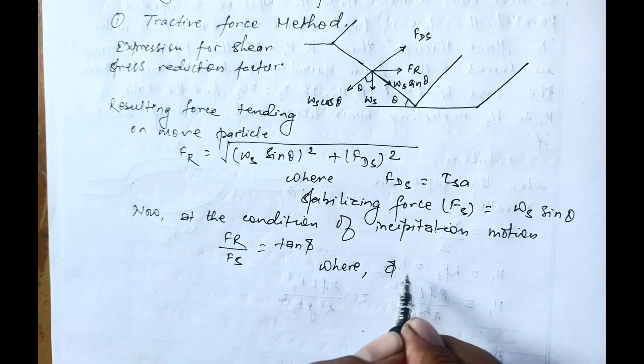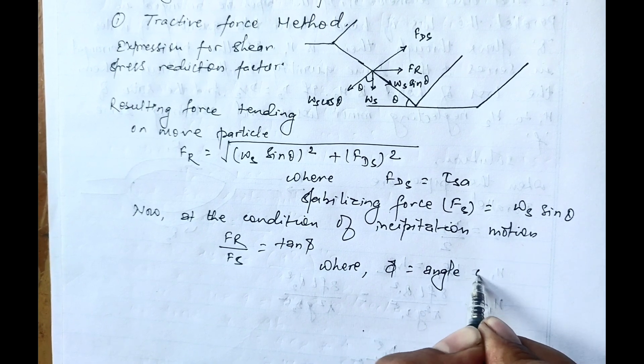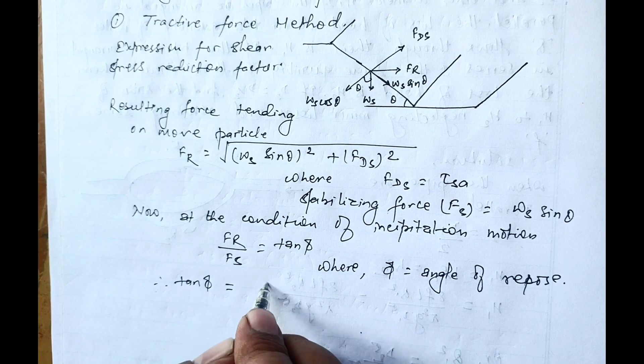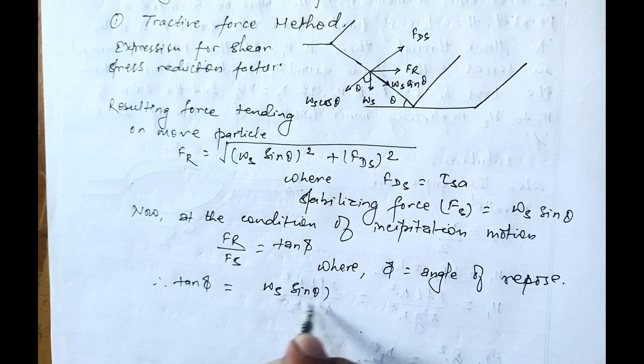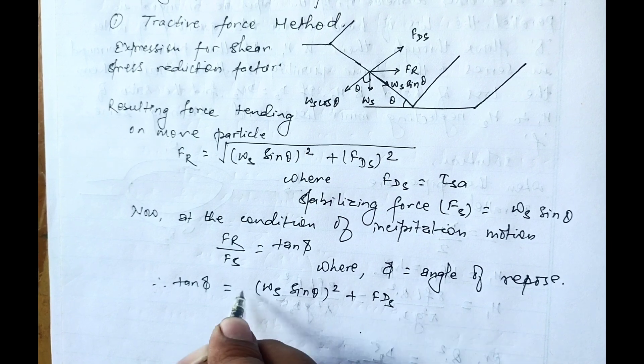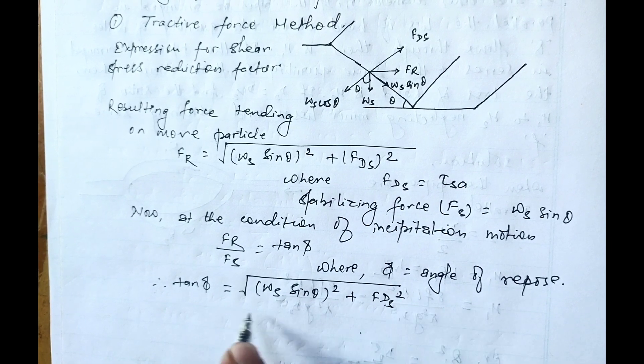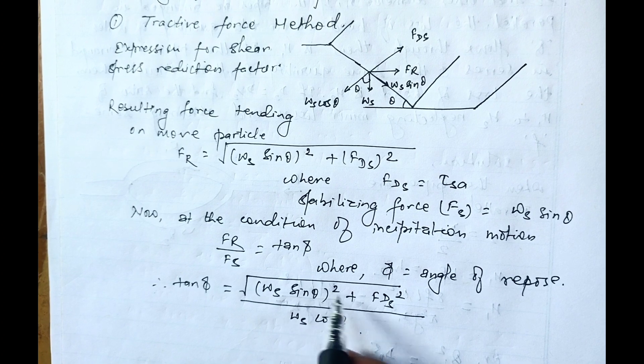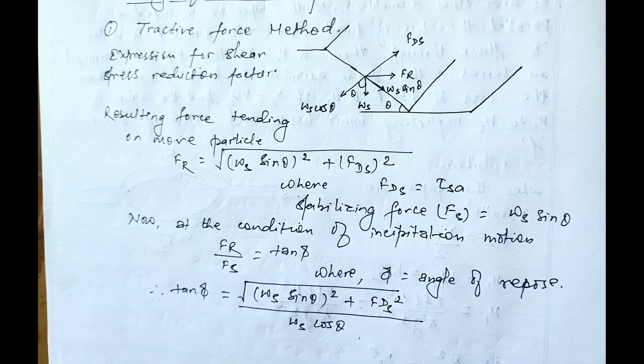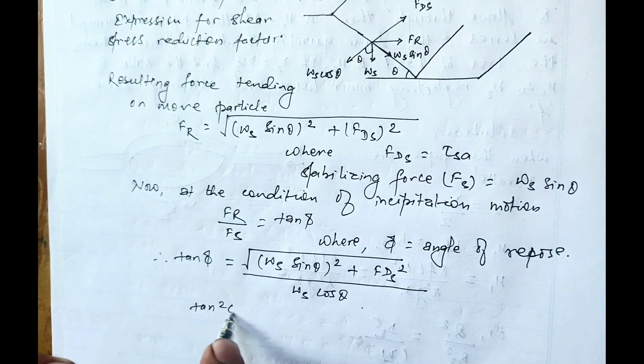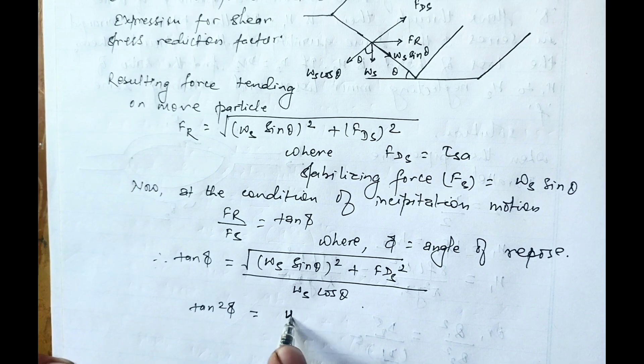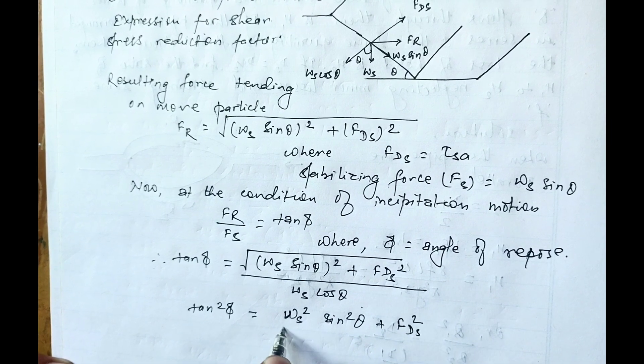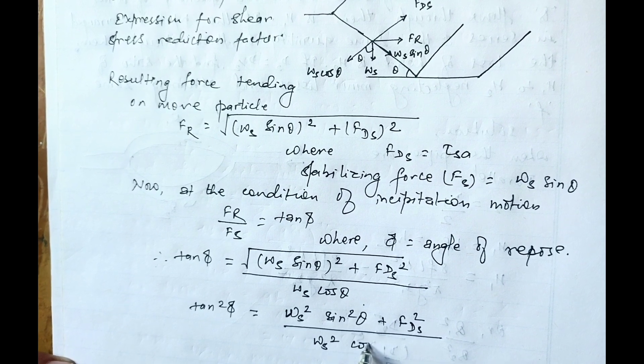Therefore tan phi equals the square root of WS sine theta squared plus FDS squared divided by WS cos theta. This can be written as tan squared phi equals WS squared sine squared theta plus FDS squared divided by WS squared cos squared theta.